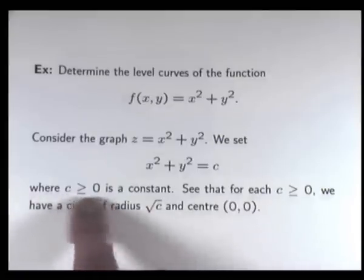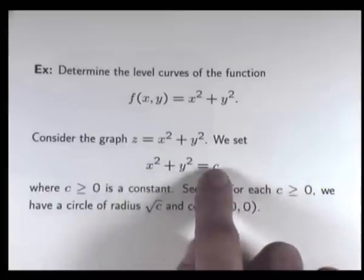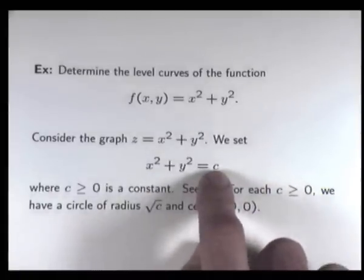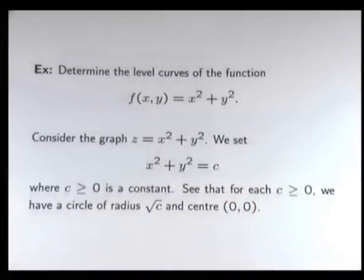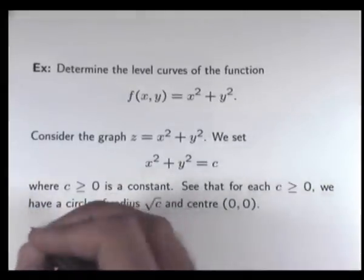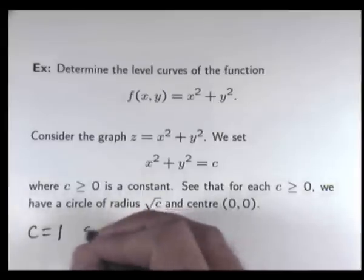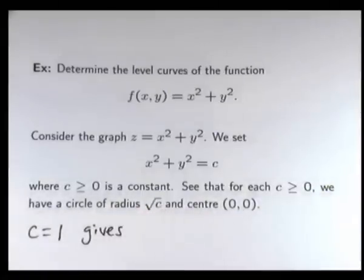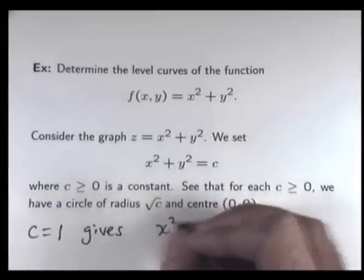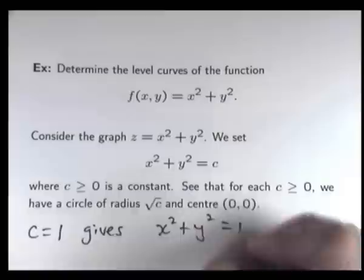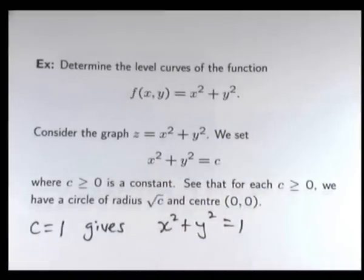In this case, I'm only going to choose non-negative values for this constant, because if you put in a negative number, it doesn't mean anything. So let's put in C equals 1. If I put C equals 1, I get X squared plus Y squared equals 1, which is a circle, center at the origin, and radius 1.